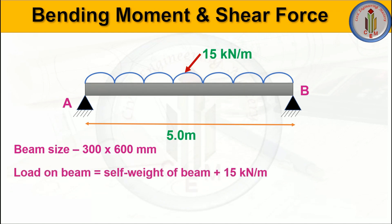Let's find out the total load on the beam, which equals the self-weight of the beam plus 15 kilonewton per meter. Note that in many textbook problems, self-weight is not considered, but when calculating the load on a beam, you should always include the self-weight as well.